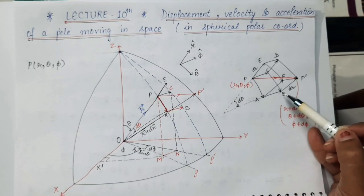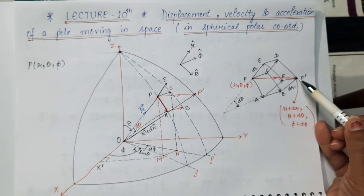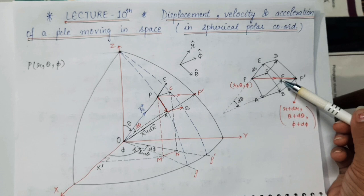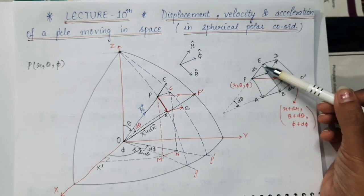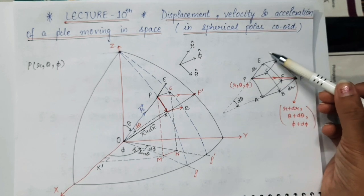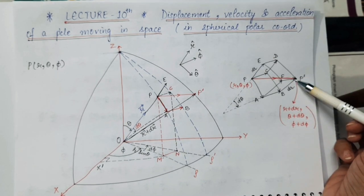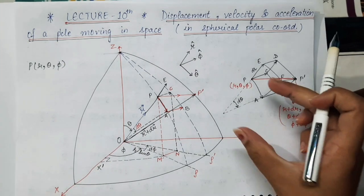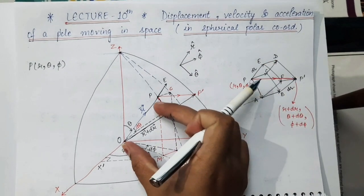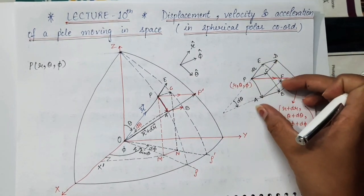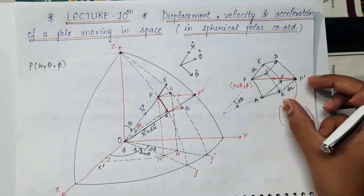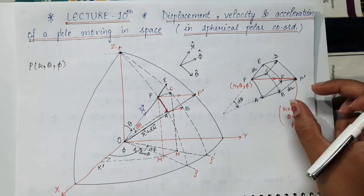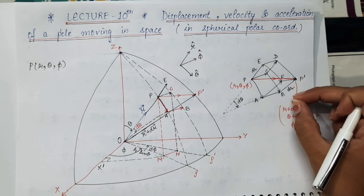We have to calculate this BP' vector, and this BP' vector is parallel to AF vector, equals to AF vector, which is equal to PE vector. The PE vector is in the direction of R cap. So this BP' vector is also in the direction of R cap, and it is a very small displacement. Its magnitude will be DR. If PE is DR, then AF will be DR and then BP' will be DR. So the magnitude of BP' is DR and its direction is R cap. Therefore, the value of this BP' vector will be DR into R cap.